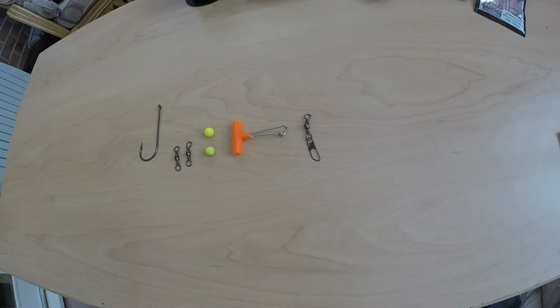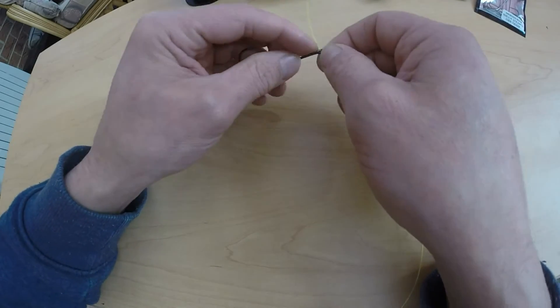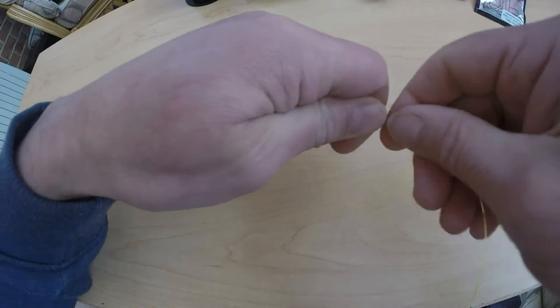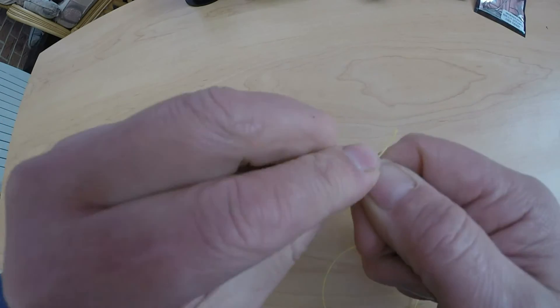Okay let's begin. First of all, tie your hook, tie your line to your hook. I like to use the uni knot, it's a good strong knot.